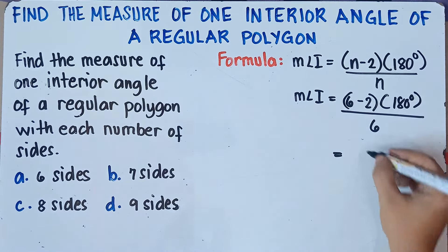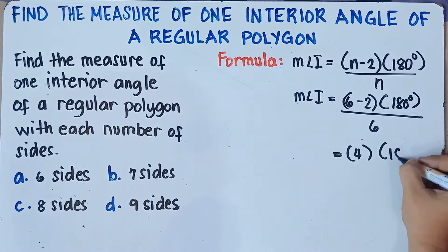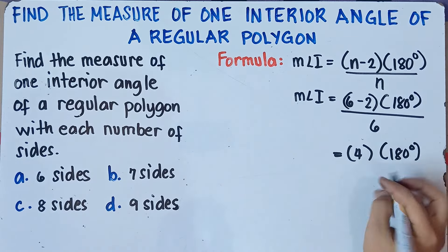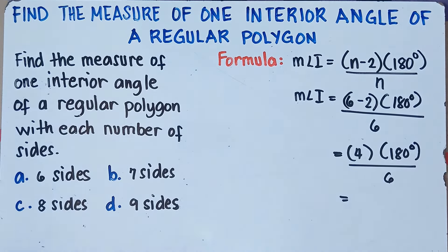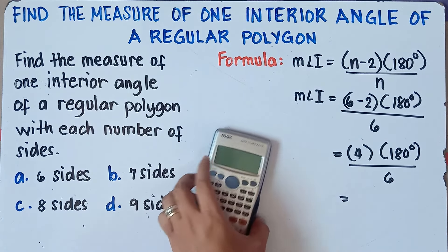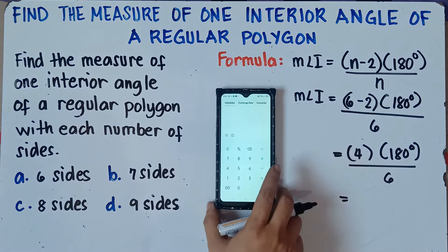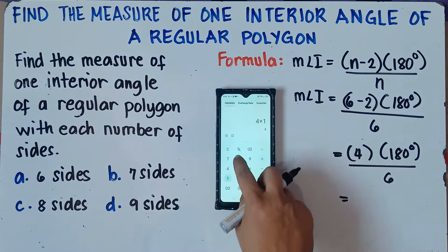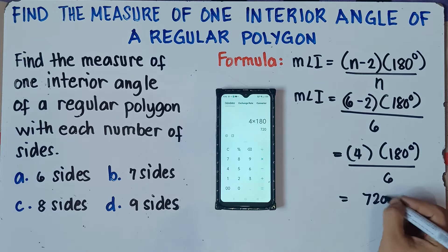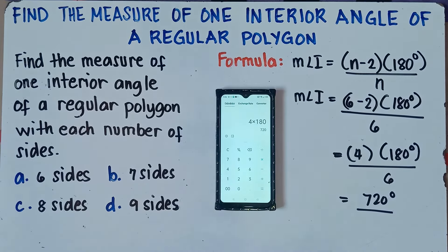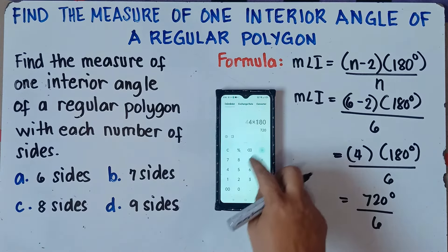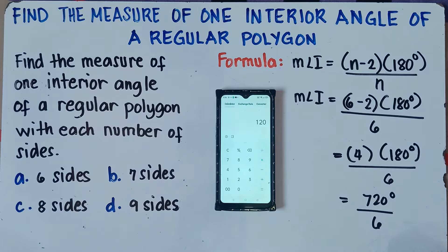So 6 minus 2 is 4, then multiply by 180 degrees, then divide by 6. You can use your calculator — my calculator is not turning on, so we will use our cell phone. So 4 times 180 equals 720 degrees, and then we divide by 6, which gives us 120 degrees.